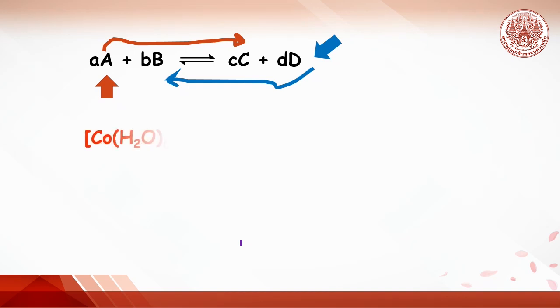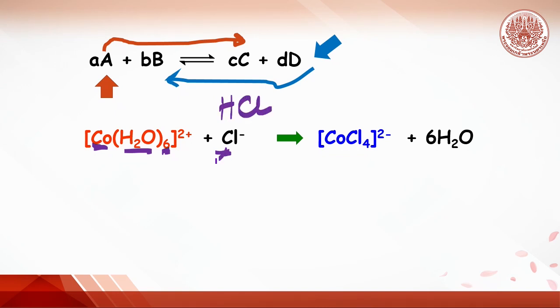Today we are interested in cobalt complex as a model of chemical reaction. Cobalt hexa aqua, or cobalt ions with six water molecules, reacts with chloride ions from hydrochloric acid. The ligand chloride will replace the water molecule to get cobalt chloride complex.